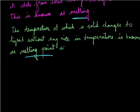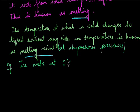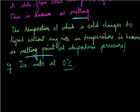The melting point is defined at atmospheric pressure. The temperature at which a solid changes to liquid without any rise in its temperature at atmospheric pressure is known as the melting point. For example, ice melts at 0 degrees Celsius. The ice starts melting at 0 degrees, and until all the ice is converted into water, the temperature remains the same — it stays at 0 degrees. Every pure substance has a fixed melting point.